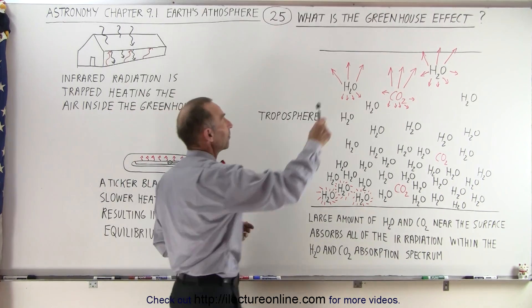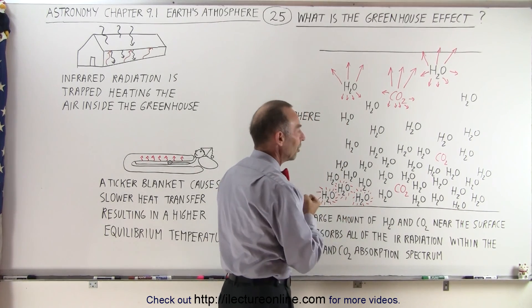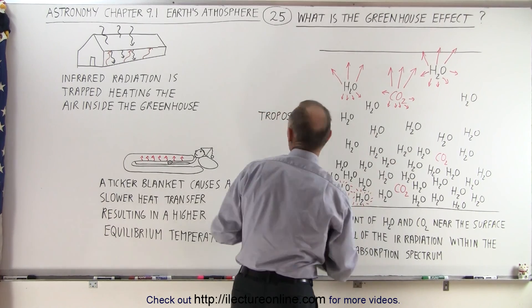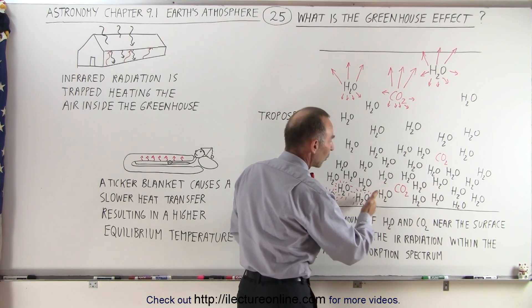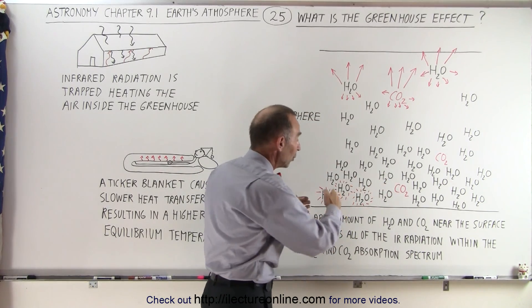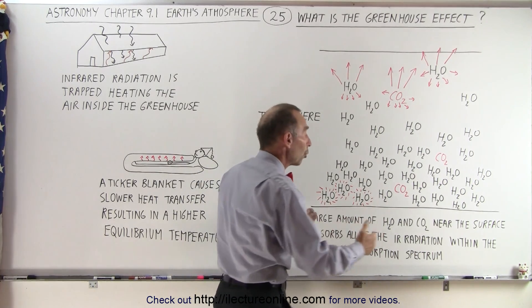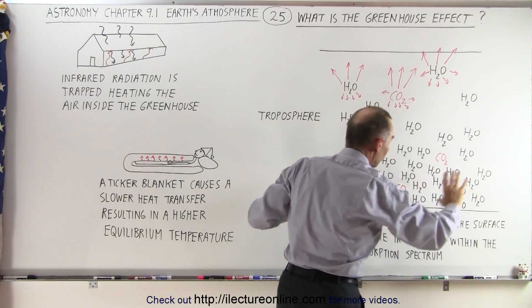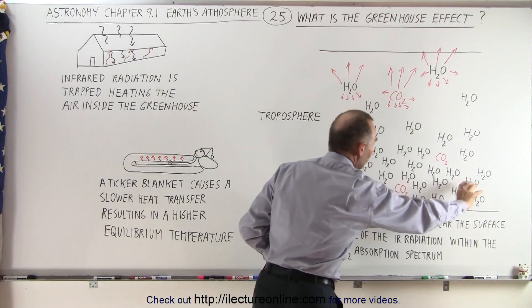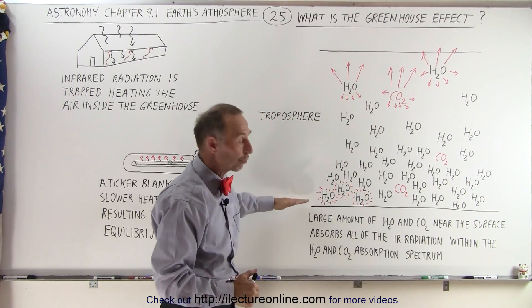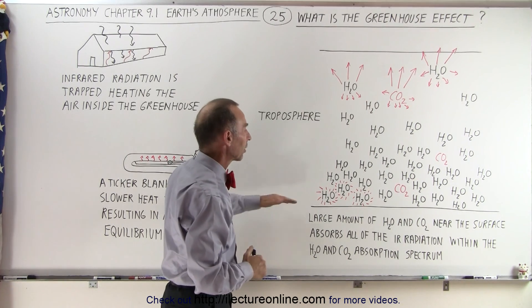So what happens? We have the sunlight coming through and finally reaching all the way down to the Earth's surface. The Earth's surface absorbs that energy and then re-radiates it in the infrared, just like what happens inside the greenhouse. A lot of that infrared radiation reaches up into the lower atmosphere — in the very first few meters — and the water vapor and carbon dioxide molecules primarily begin to absorb a lot of that infrared radiation. About 5 to 6% of the total energy received from the Sun gets reabsorbed by the greenhouse gases in the lower troposphere, really within the first 10, 20, or 30 meters above the surface.